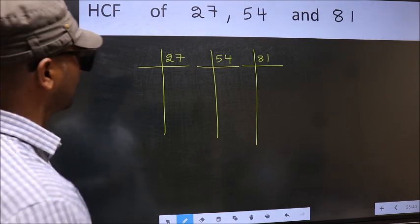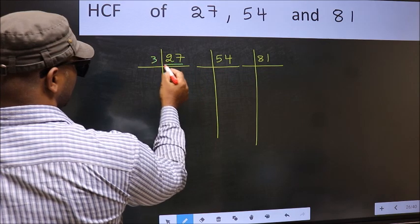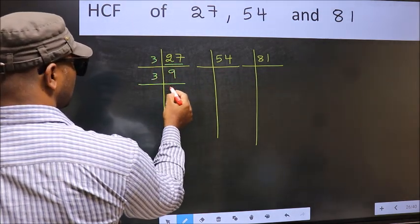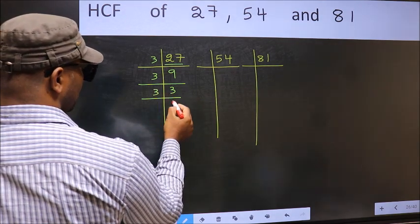Next. Here we have 27. 27 is 3 nines 27. Now 9 is 3 3 is 9. Now 3 is a prime number so 3 1 is 3.